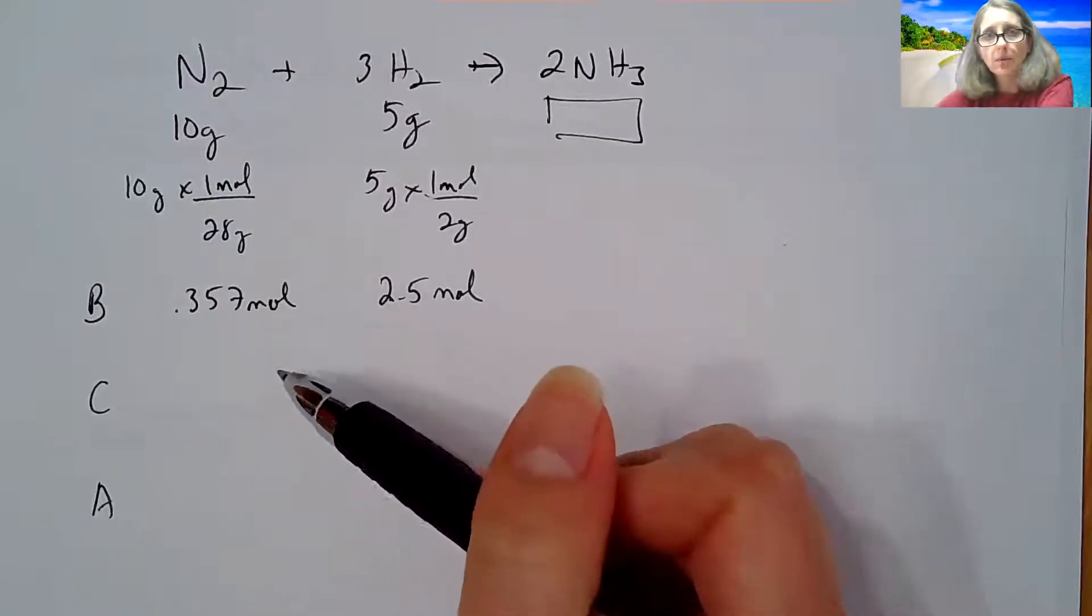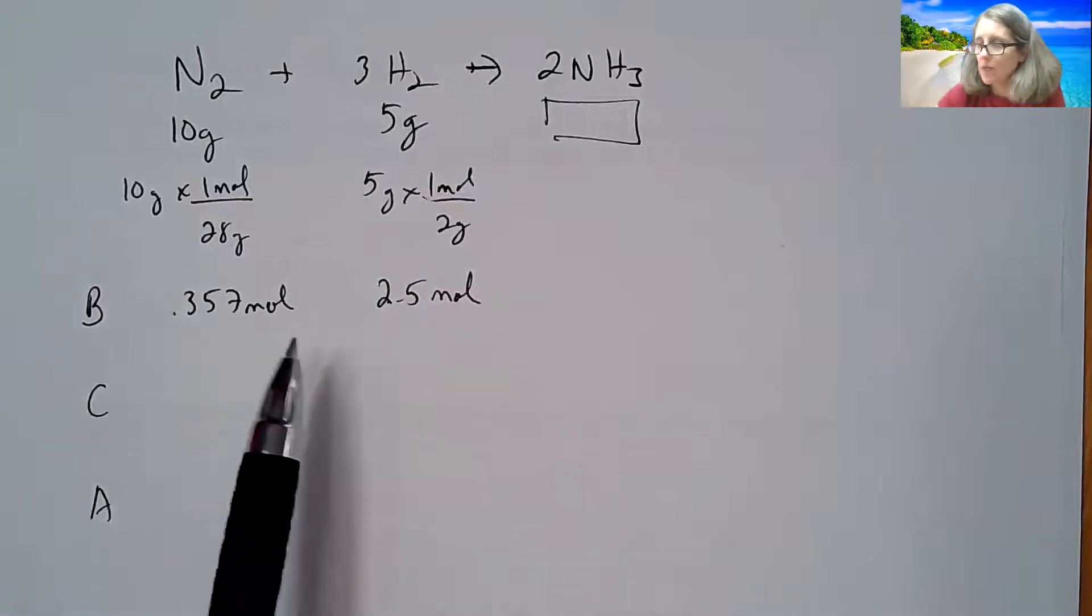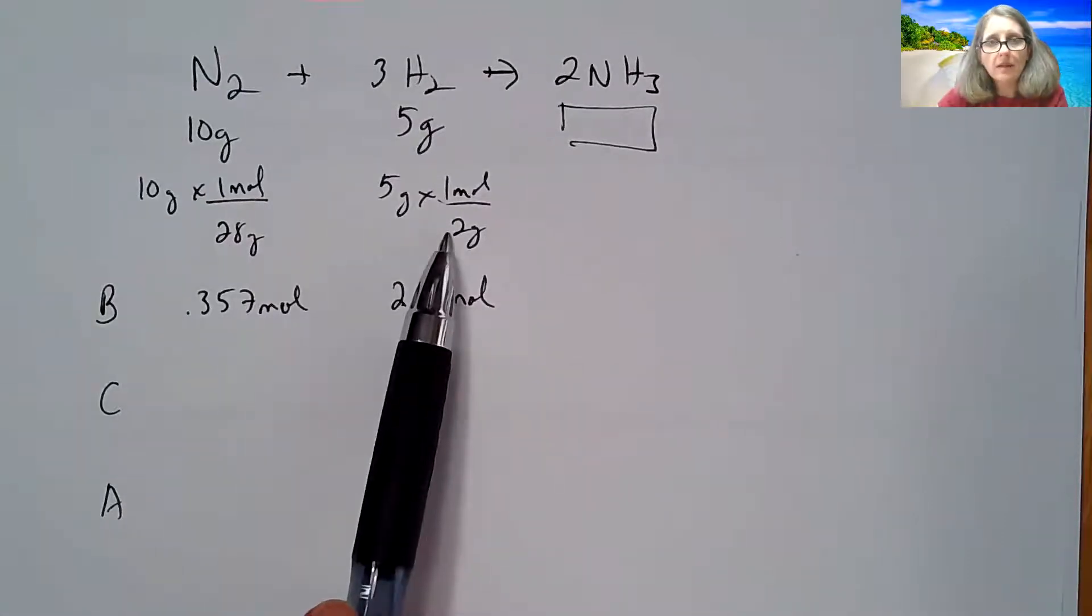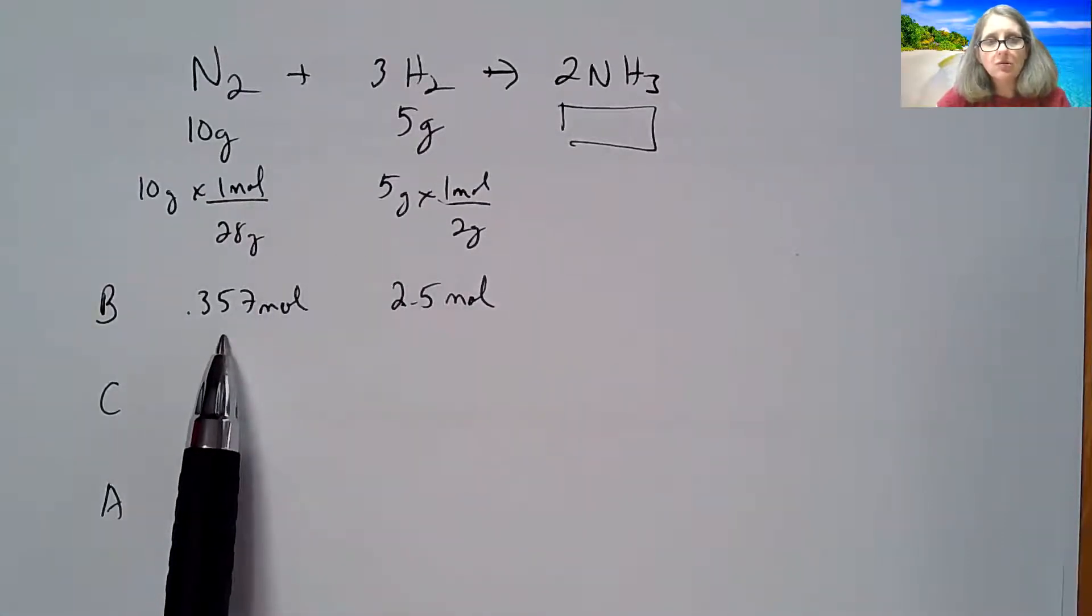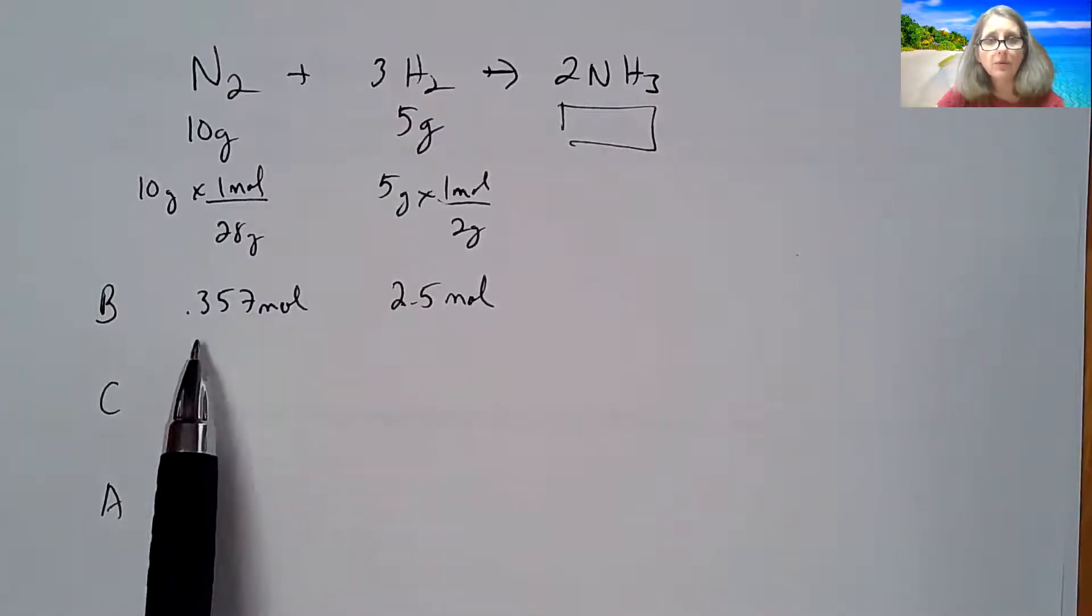So in order for us to compare things in chemistry, we can't compare things in grams, it has to be in moles. So I have to divide each one of these by their respective molar mass, and I get nitrogen is 0.357 and this is 2.5 moles.